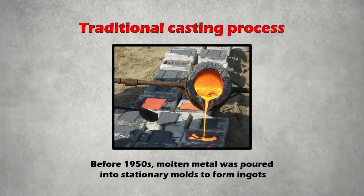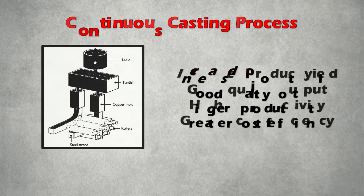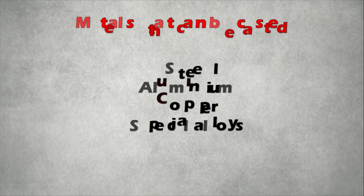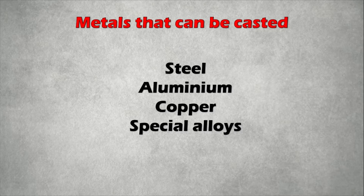Before the 1950s, steel was poured into stationary molds to form ingots. Since then, continuous casting has evolved to achieve improved yield, quality, productivity, and cost efficiency. Continuous casting process can be used to cast steel, aluminium, copper, and other special alloys. The basic outline of this system has recently been implemented today in the casting of steel strips.